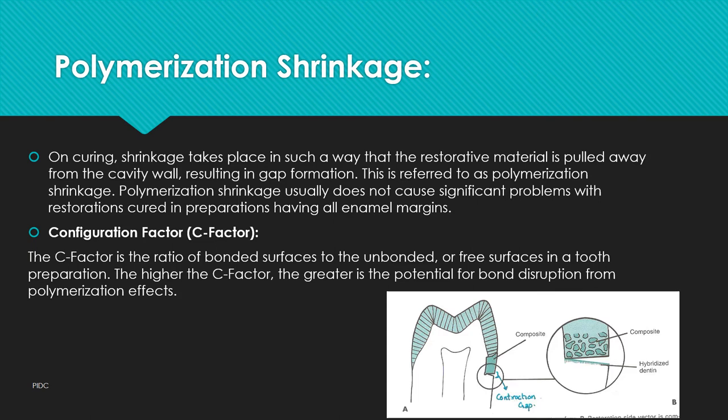Regarding polymerization shrinkage: on curing, shrinkage takes place in such a way that the restorative material is pulled away from the cavity wall, resulting in gap formation. This is referred to as polymerization shrinkage. It usually does not cause significant problems with restorations cured in preparations having all enamel margins. Essentially, when the composite gets cured, it results in a gap between the restorative material and the tooth surface — the composite shrinks.